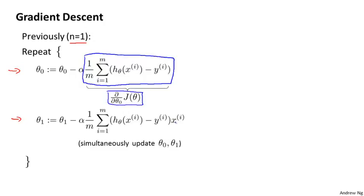There's one little difference, which is that when we previously had only one feature, we would call that feature xi. But now in our new notation, we would call this xi subscript 1 to denote our one feature. So that was for when we had only one feature.